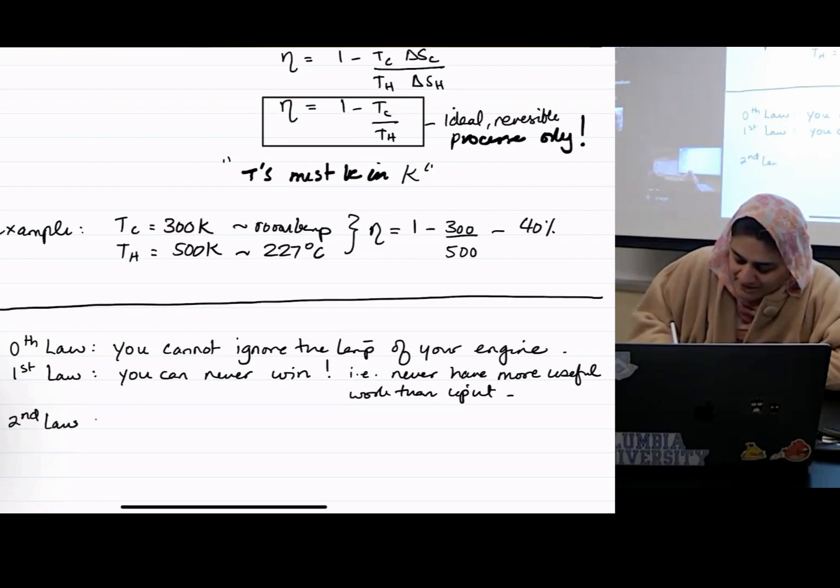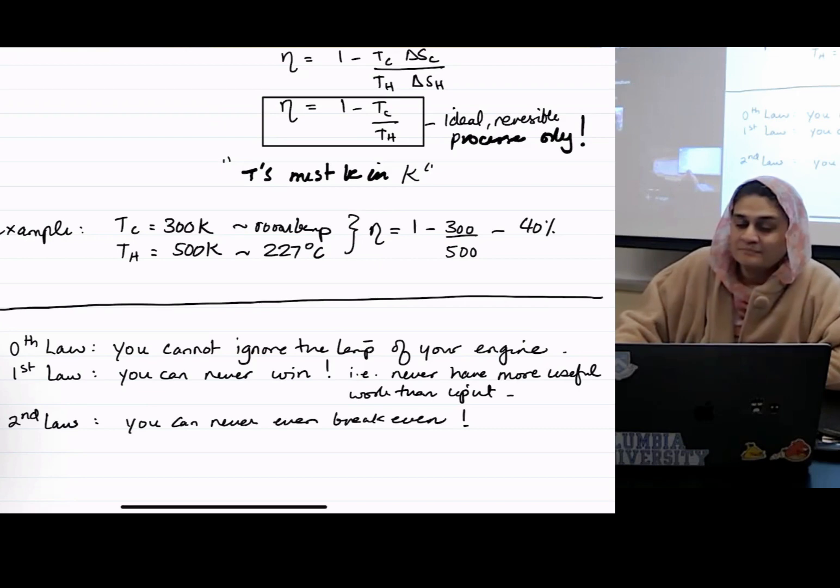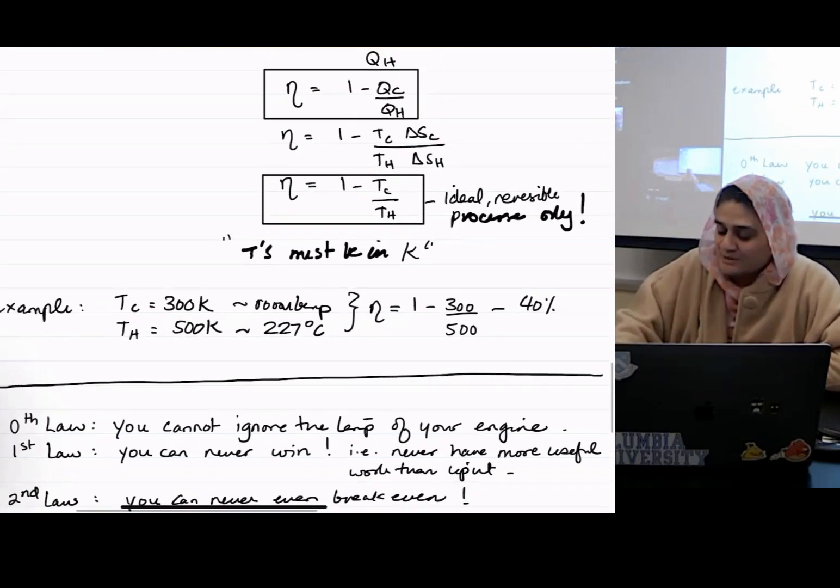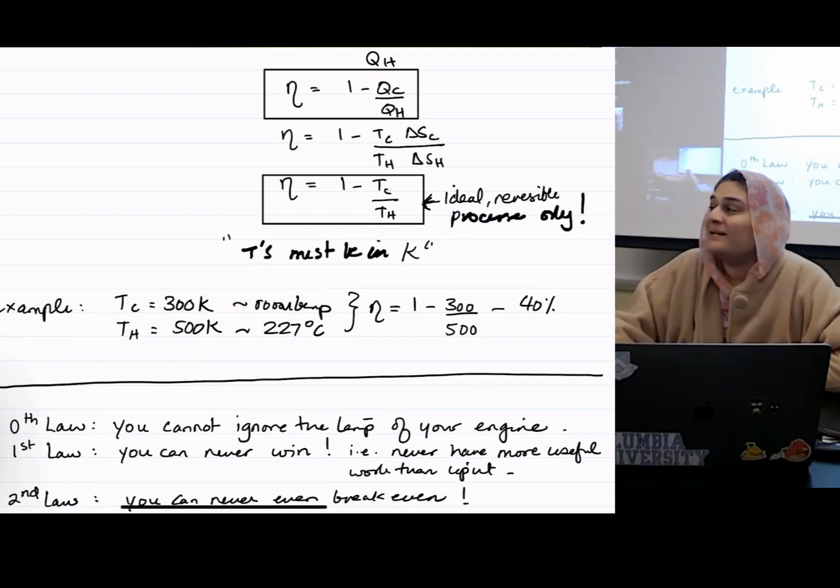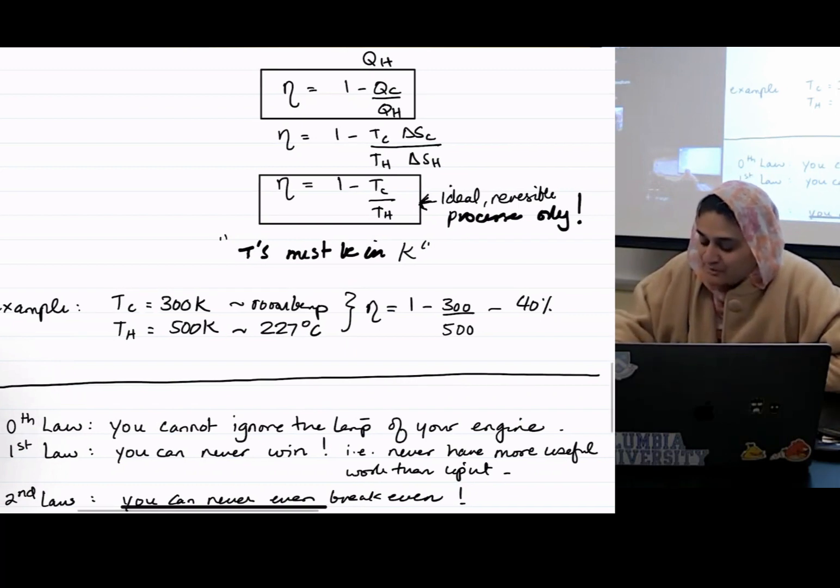Second law says you can never even break even. Remember when I said this was only true for ideal reversible processes? You can actually never ignore entropy loss in your real cycles. So you can't even break even.